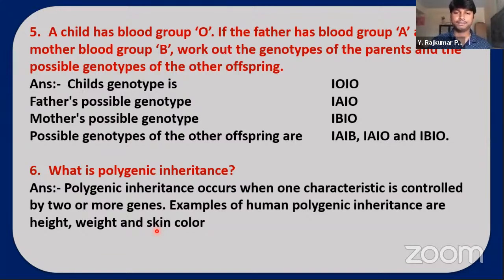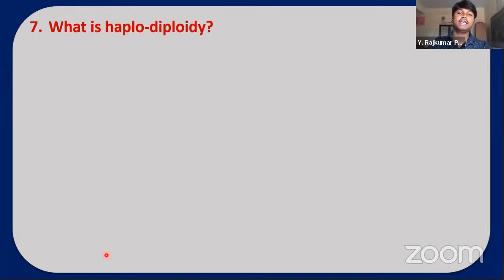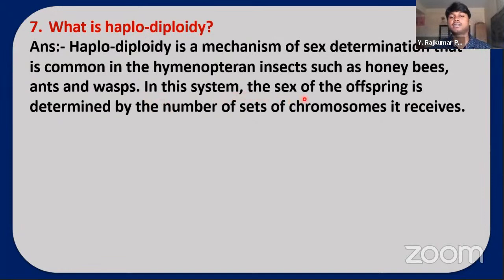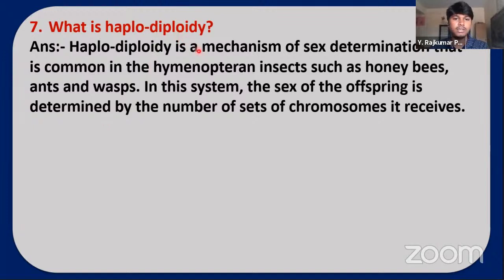Next question: What is haplodiploidy? Haplodiploidy is a mechanism of sex determination that is common in hymenopteran insects such as honeybees, ants, and wasps. In this system the sex of the offspring is determined by the number of sets of chromosomes it receives.